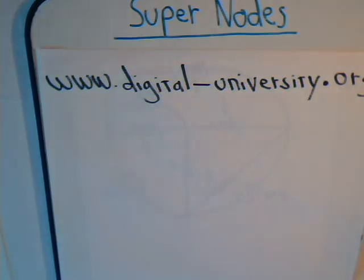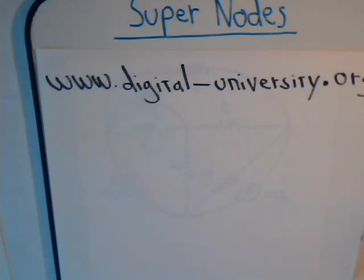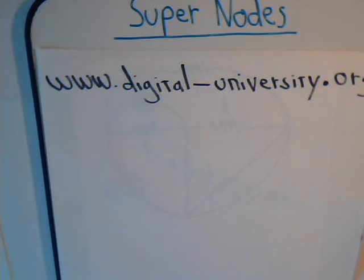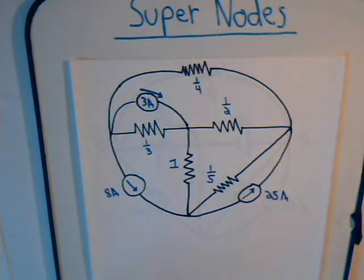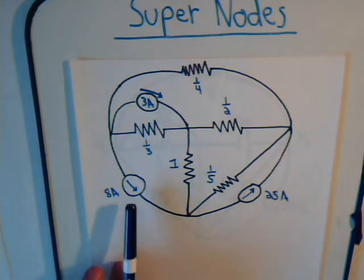This is video number 39 from digital-university.org. We're going to again take a look at the super node technique and use it to solve a circuit that incorporates both current and voltage sources. If you just found us on YouTube, you can go to the website at digital-university.org where you'll find the whole playlist of electrical circuit analysis techniques we've prepared so far. What we're going to do is consider this circuit that for the moment incorporates only current sources.